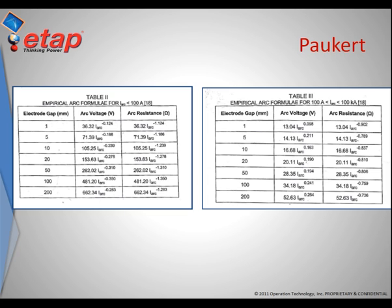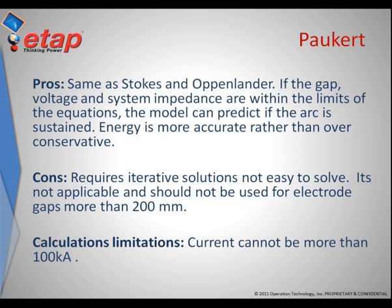Similarly to the Stokes and Oppenlander method, if the gap voltage and system impedance are within the limit, the model can predict if the arc can be sustained or not. Unfortunately, this method requires an iterative process to determine the solution — it must be solved iteratively with the system's impedance.